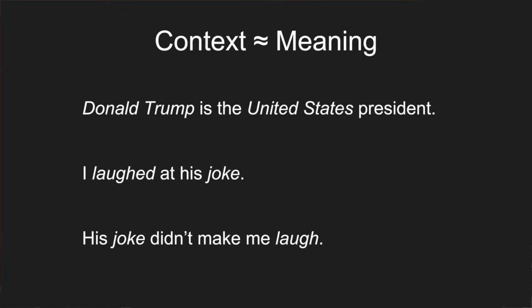There's another way that context can help us: if two words happen to always appear in the same context together. For example, Donald and Trump are likely to appear together because one's the first name and one's the last name of the same person. United States is kind of just one logical word broken into two smaller words, so United and States are likely to appear together. And joke and laugh are related words—you laugh at a joke—so they're also likely to appear in the same context.